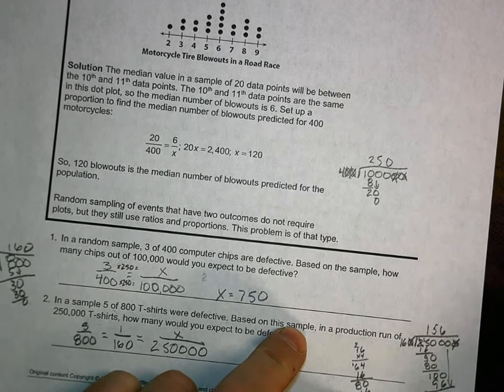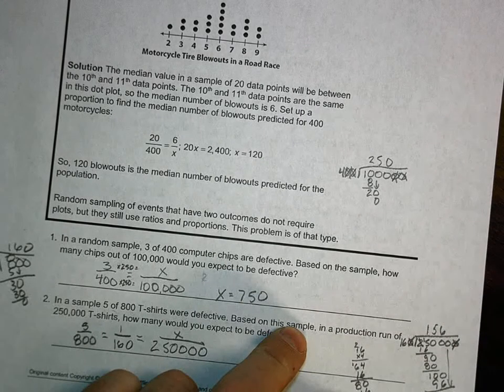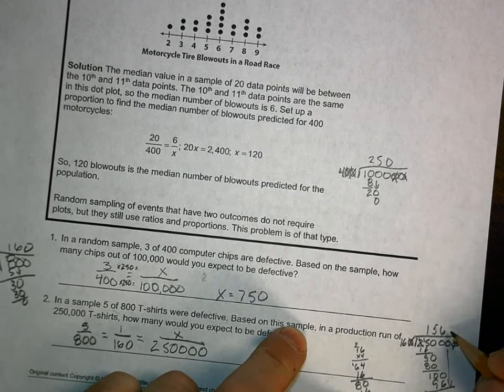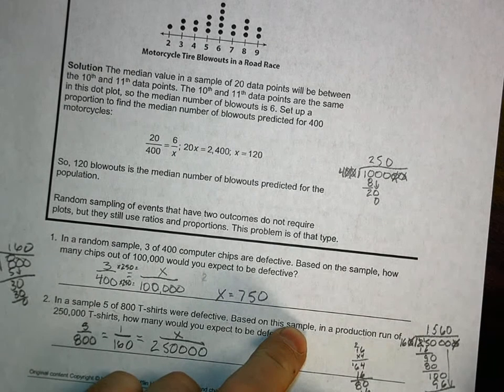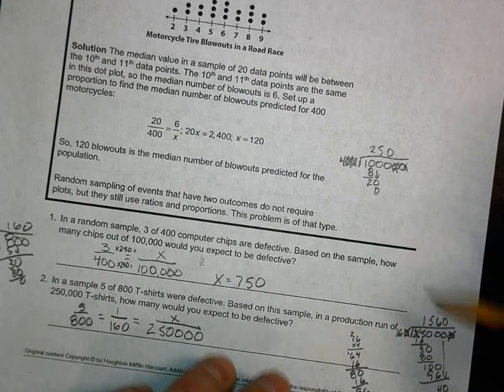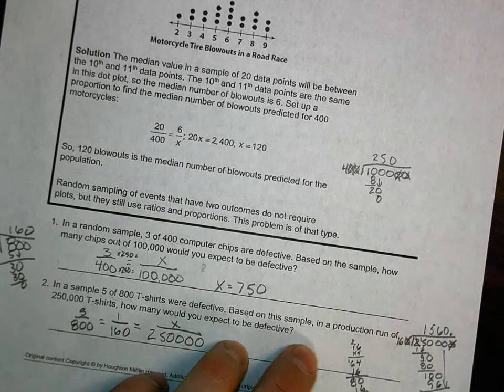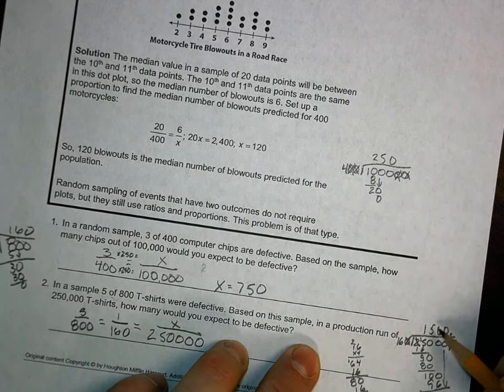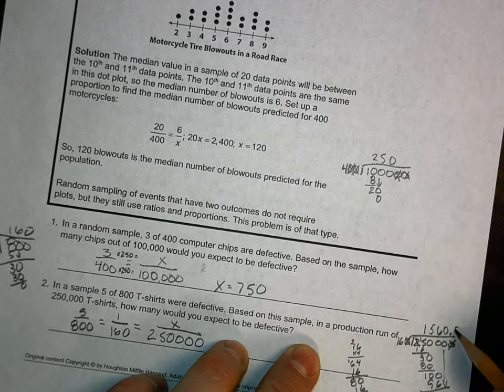So 40, 16 will go into 40 twice, that's 32. I definitely have to go out to one decimal place. That leaves me 8. 80 divided by 16 is 5, so that's point 5.